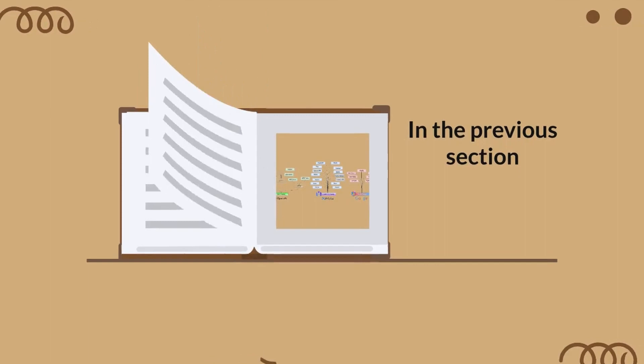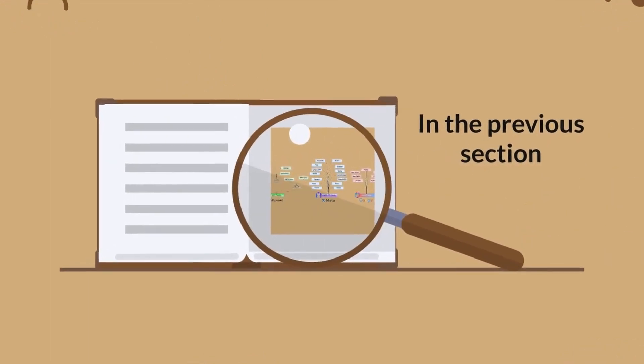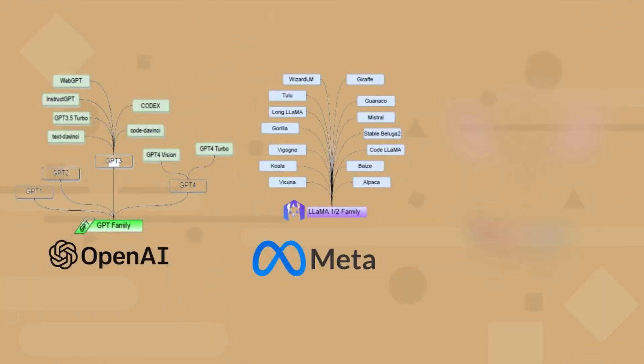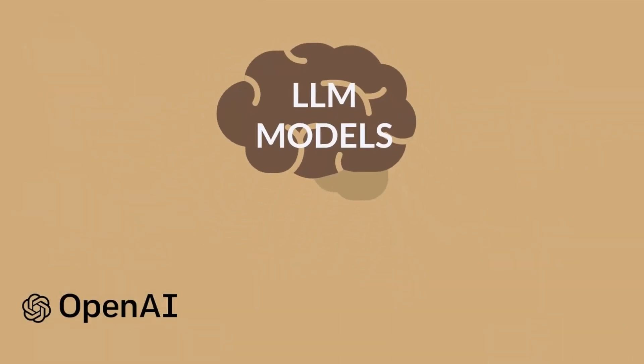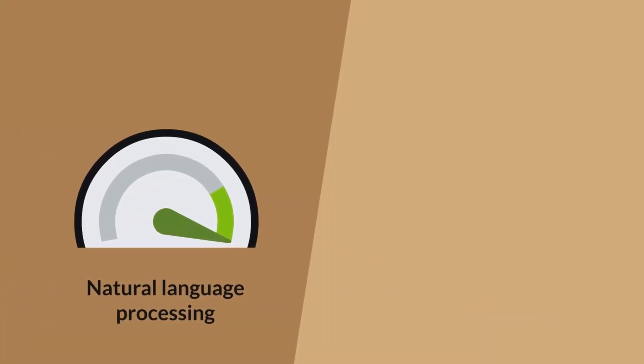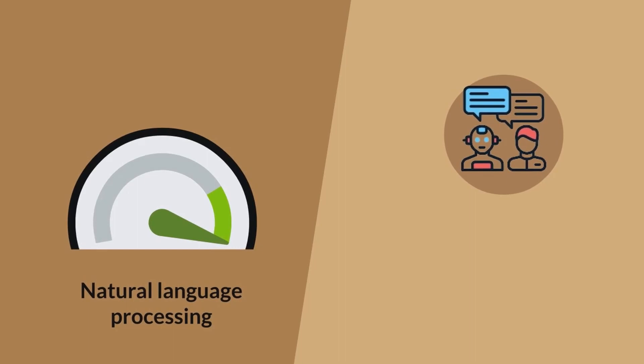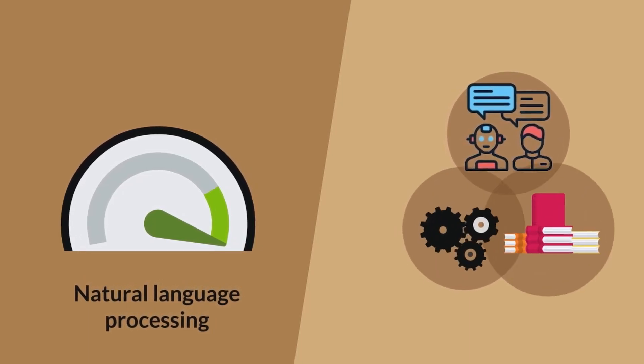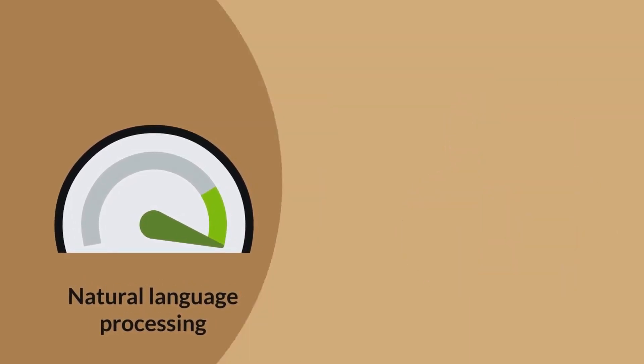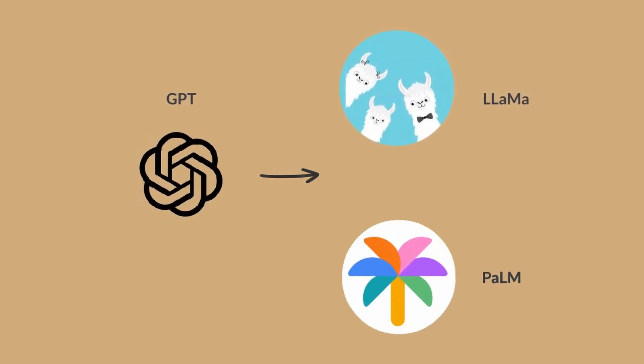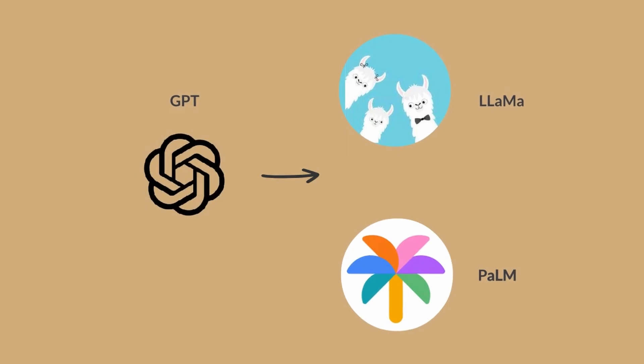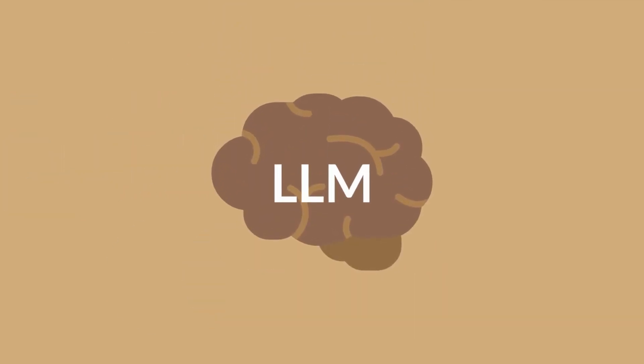In a prior video, we delved into the transformative landscape of large language models, highlighting the remarkable strides made by the GPT, LLM, and Palm families. These models, developed by leading tech giants OpenAI, Meta, and Google, have set new benchmarks in natural language processing with their vast capabilities in language understanding, generation, and the emergence of novel applications. From the evolution of GPT models to the open-source breakthroughs of LLM and the pioneering training methodologies of Palm, the discourse painted a comprehensive picture of the current state of LLM technology, underscoring their profound impact on the field.